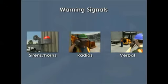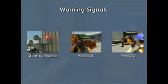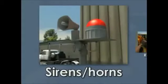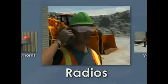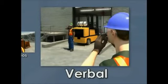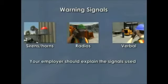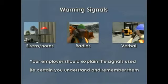Your workplace will use one of several different types of warning signals to alert workers in the event of an emergency. These warning signals may include, but are not limited to, sirens and horns, radios, verbal communication, talking, or yelling. Your employer should explain the warning signals used at your mine during training. Be certain you understand and remember the signals, and know how to respond when they are used.